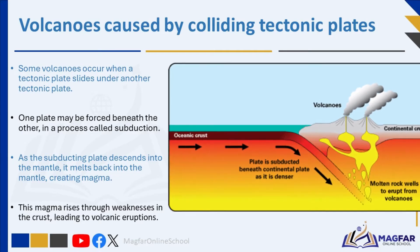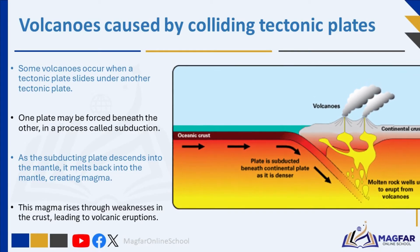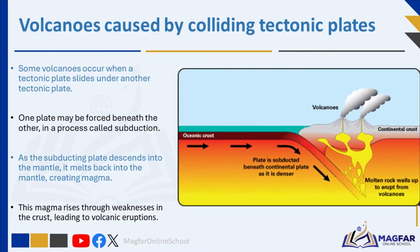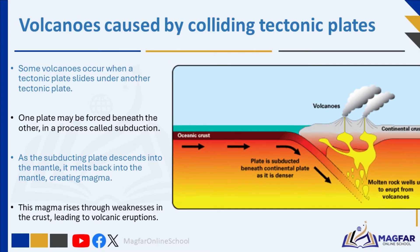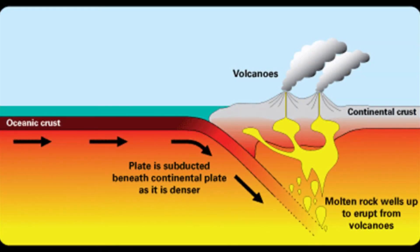Some volcanoes occur when a tectonic plate slides under another. At convergent boundaries, one plate may be forced beneath the other in a process called subduction. As the subducting plate descends into the mantle, it melts due to the high temperature and pressure, creating magma. This magma rises through weaknesses in the crust, leading to volcanic eruptions.